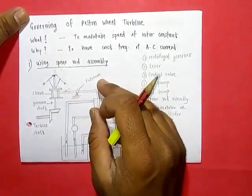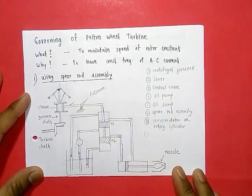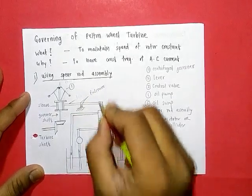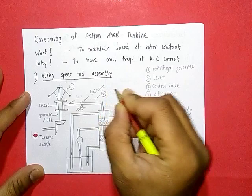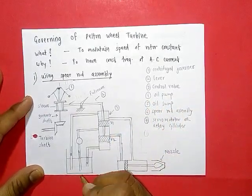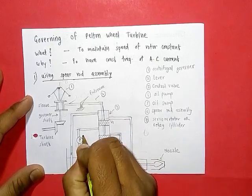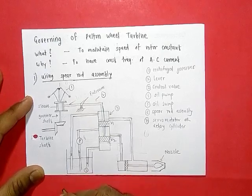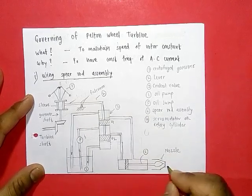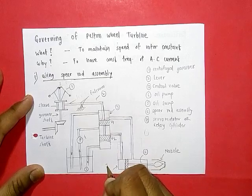The first method is using the spear rod assembly, used for Pelton wheel turbines. The governing mechanism consists of: a centrifugal governor working on centrifugal effect, a lever pivoted on a fulcrum, a control valve to control oil flow, an oil pump to carry oil from the sump to the control valve, an oil sump for storage, a spear rod assembly with a nozzle, and a servo motor or relay valve.